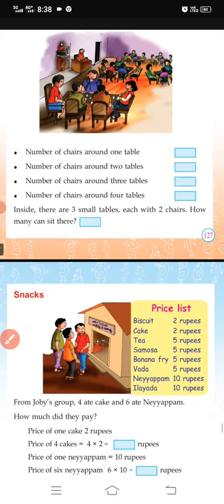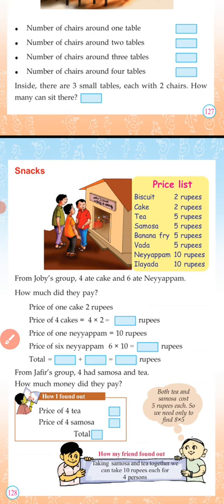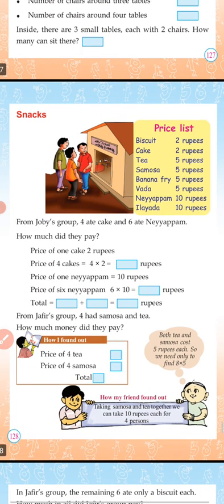Moving to the next page: snacks. Look at the price list. Biscuit two rupees, cake two rupees, tea five rupees, samosa five rupees, banana fry five rupees, vada five rupees, naiappam ten rupees, elada ten rupees.